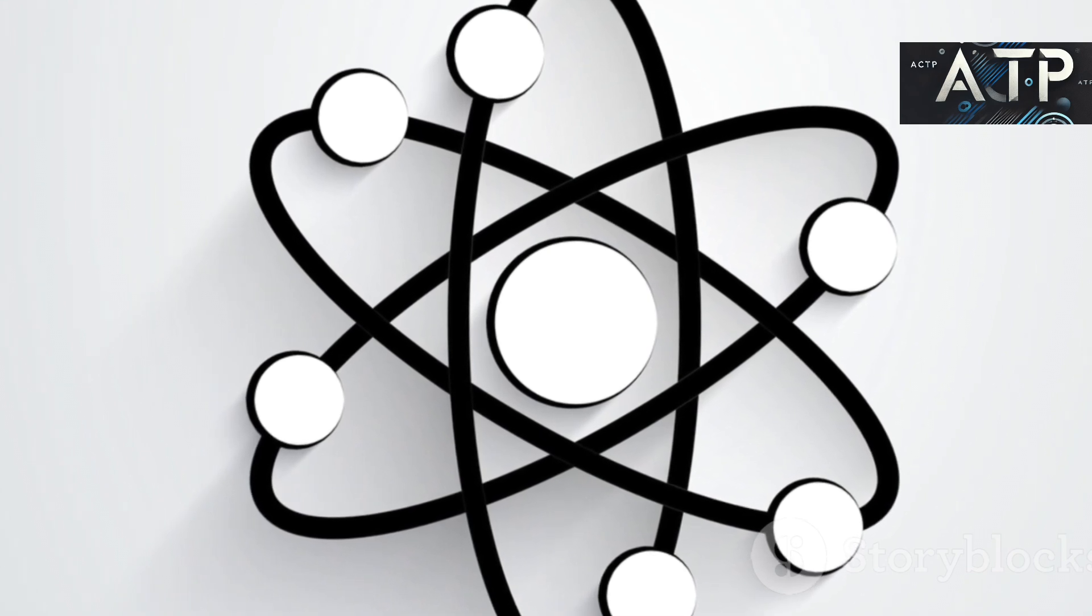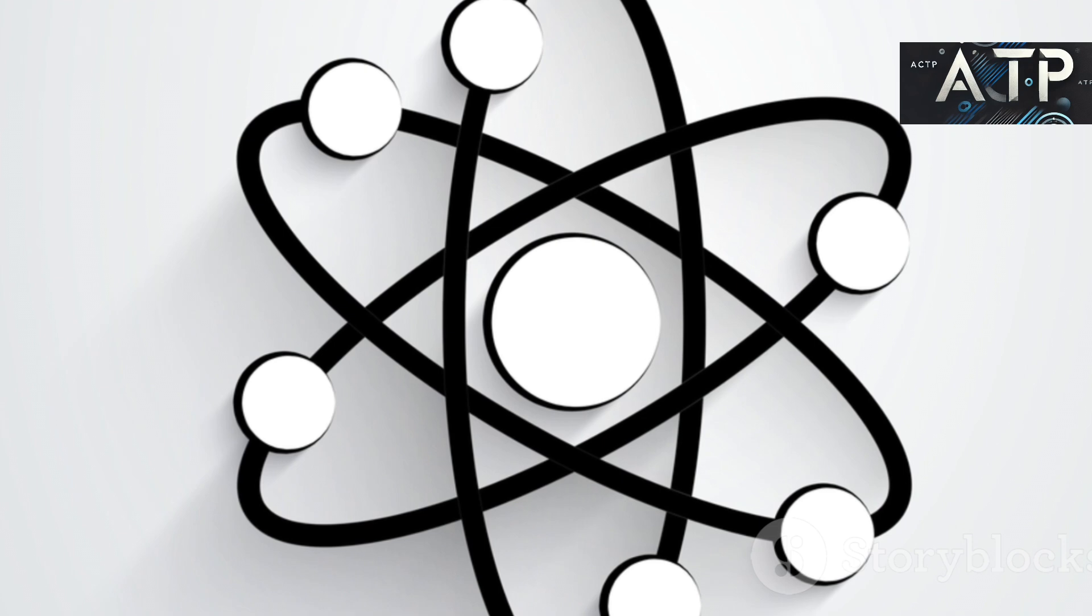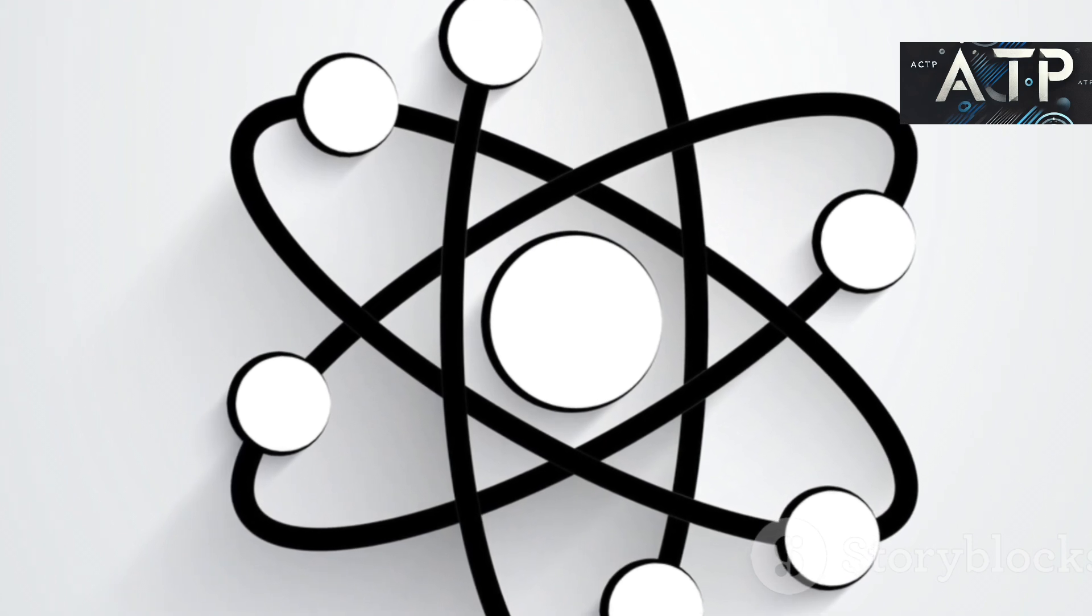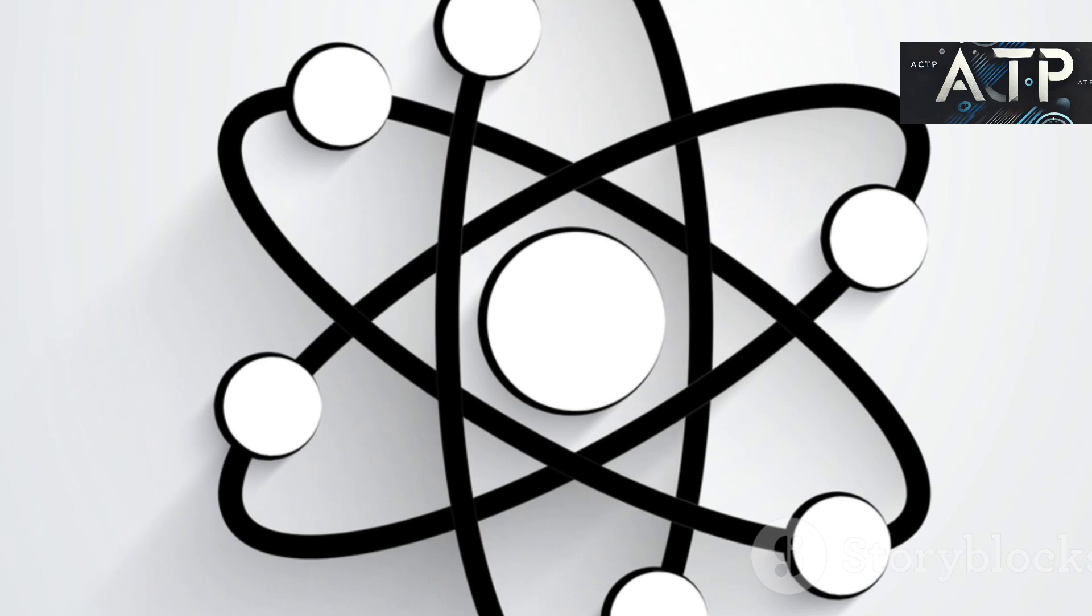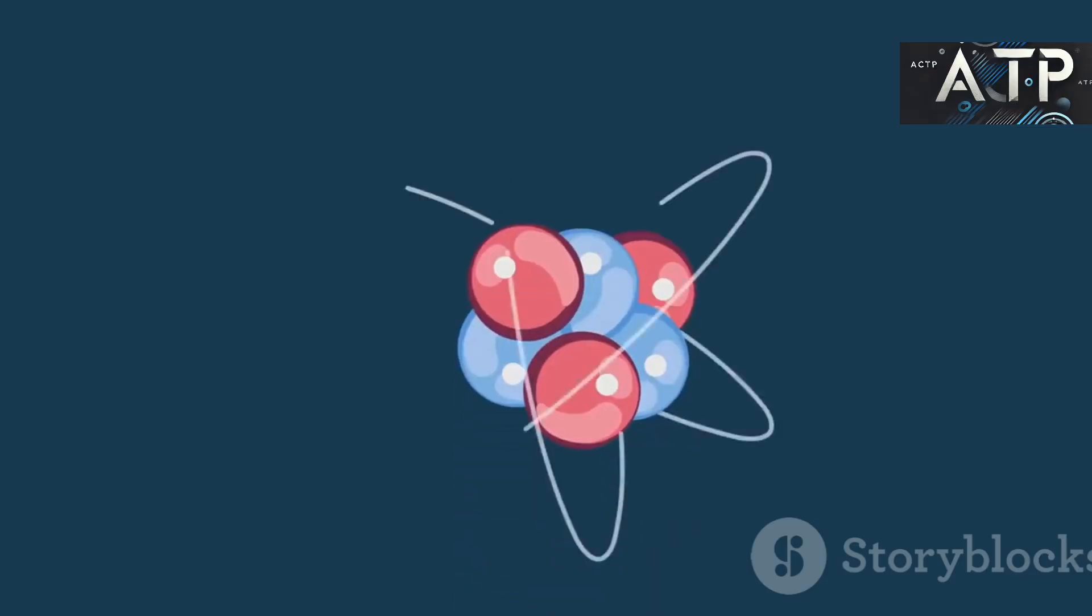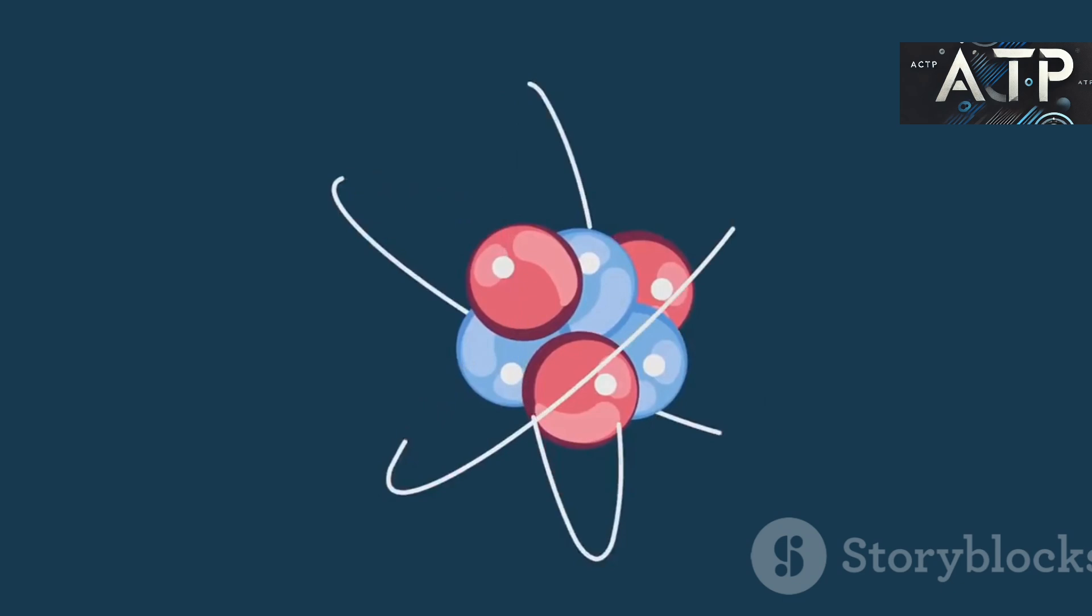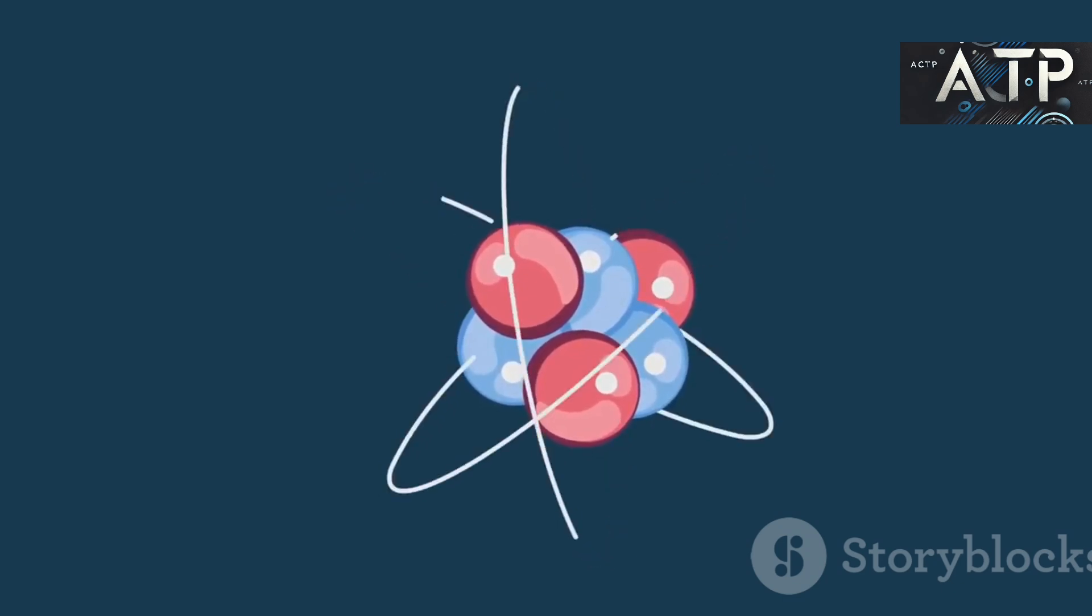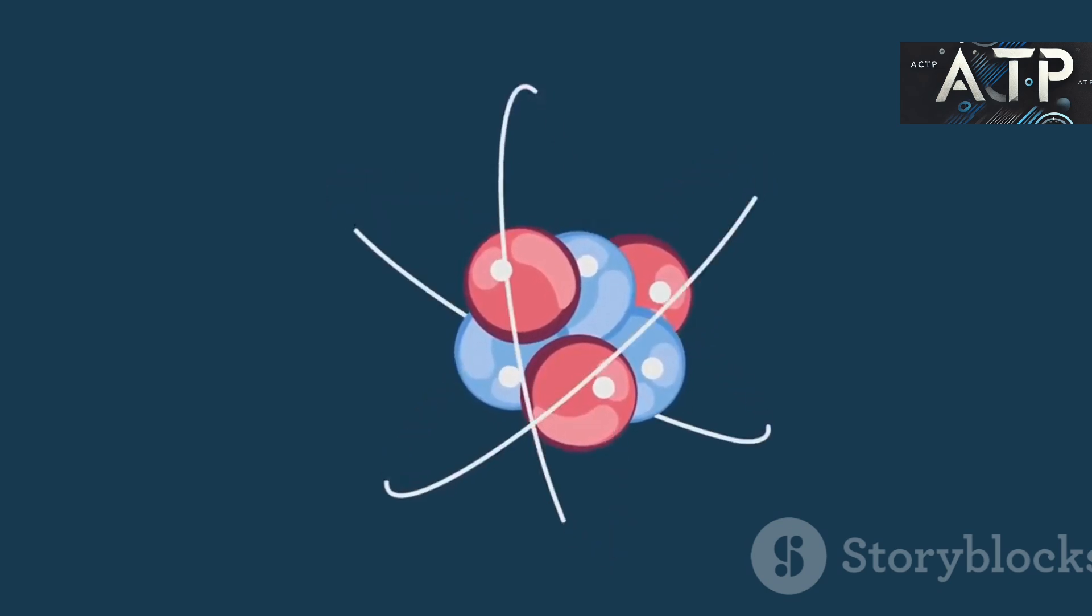Electrostatic repulsion: protons, all carrying a positive charge, naturally repel each other. Although the strong force usually overcomes this repulsion, the competition between these forces can influence how nucleons arrange themselves spatially. This delicate balance is the first hint that the shape of a nucleus isn't arbitrary. It's the result of competing interactions that favor certain arrangements over others.